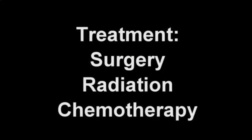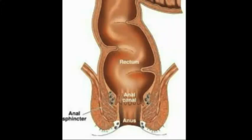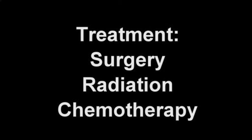The treatment of rectal cancer often involves a combination of surgery, radiation therapy, and chemotherapy. Because of the complex anatomy of the anal sphincter, there are various surgical techniques that may be utilized to preserve anal sphincter function. In addition, radiation therapy and chemotherapy are often administered to shrink the tumor prior to performing surgery.